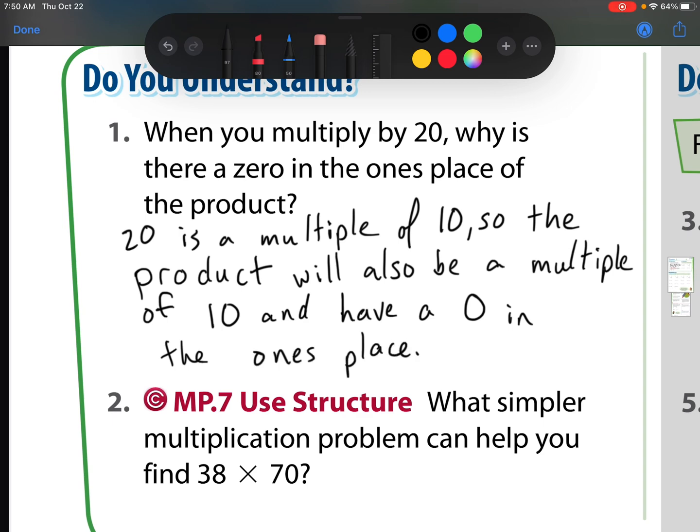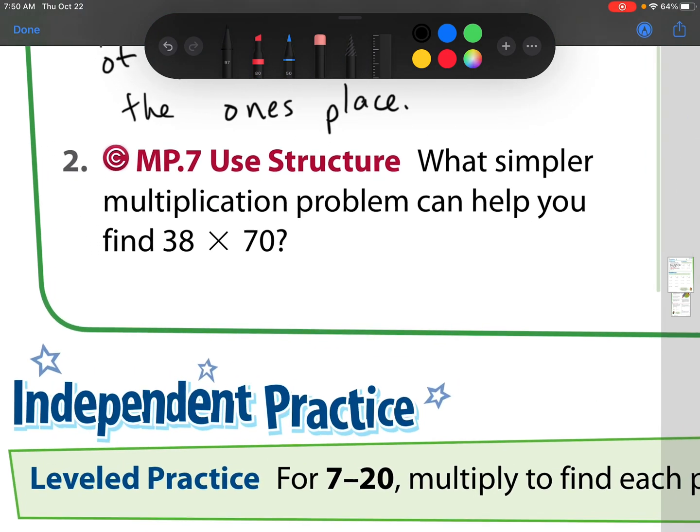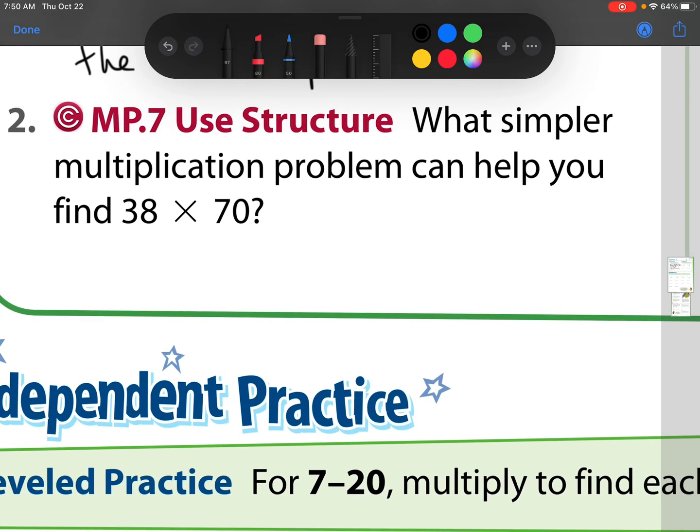So let's head to number two now. It says, what simpler multiplication problem can help you find 38 times 70? Remember when we say simpler, we're looking for a problem that has less numbers because it's easier to multiply and work with. So remember when we have anything that ends in a zero, we can get rid of that zero and add it on after we solve it. So this is my simpler multiplication problem, 38 times 7.